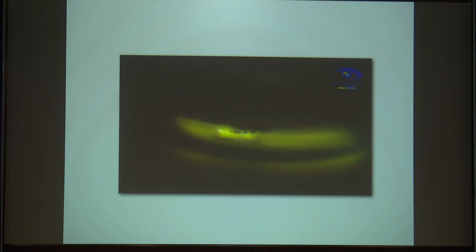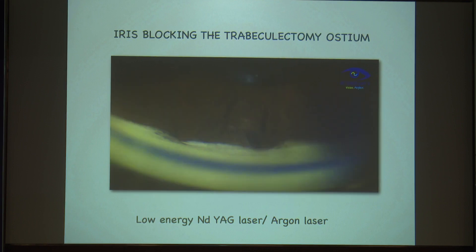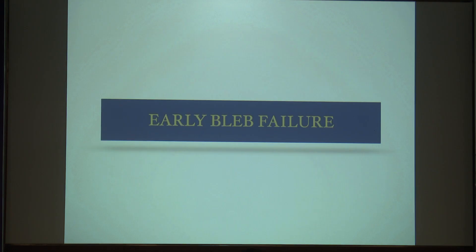Coming to internal obstruction: do a gonioscopy to find out if anything is obstructing the trabeculectomy ostium. The iris can be blocking the ostium. In such cases, if the IOP is high, you can use a laser to the peripheral area so that it will move away, or go surgically with a spatula and release that area. When you see the pupil, that area superiorly will have a peaking — that is how you will know there is a block.